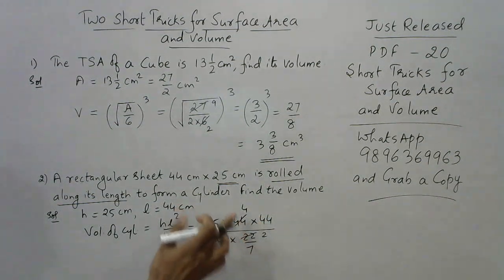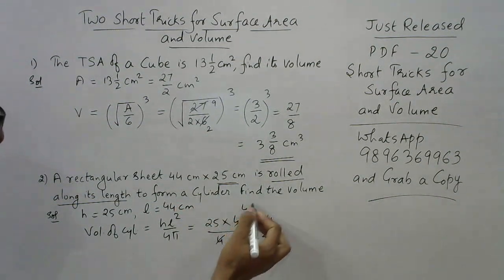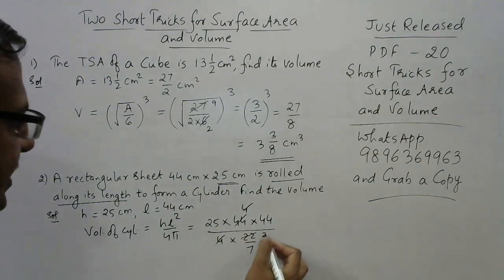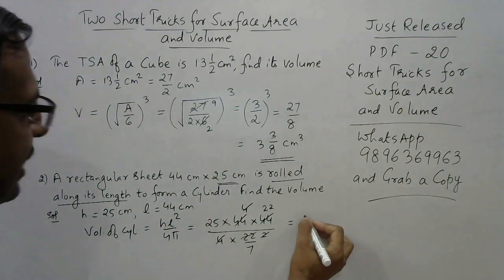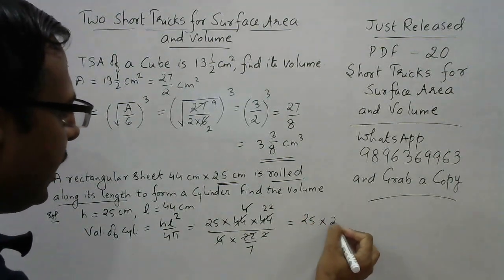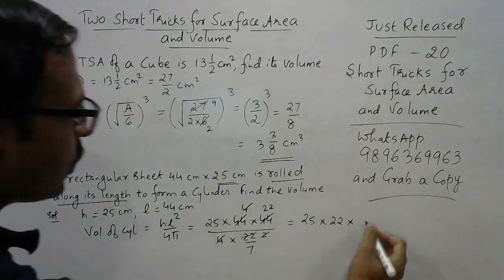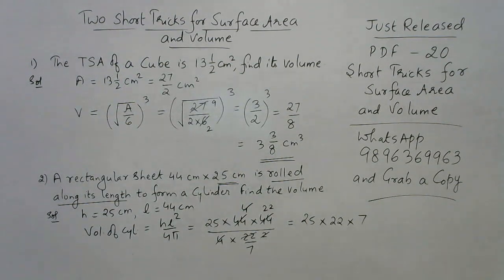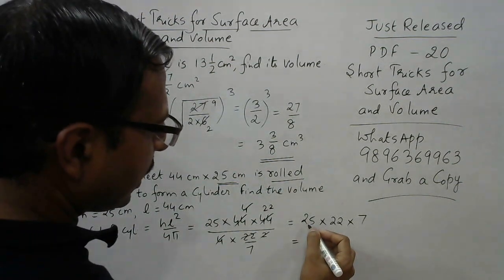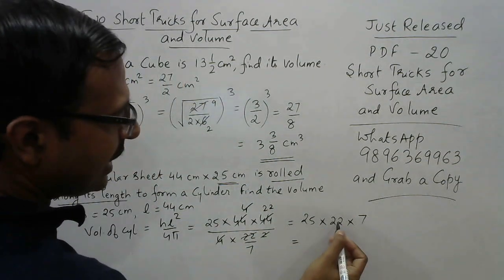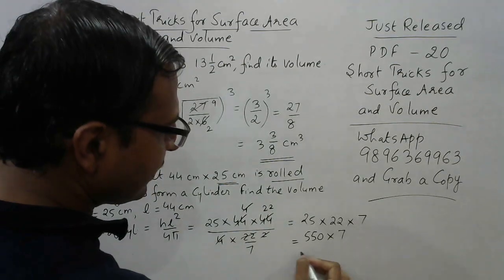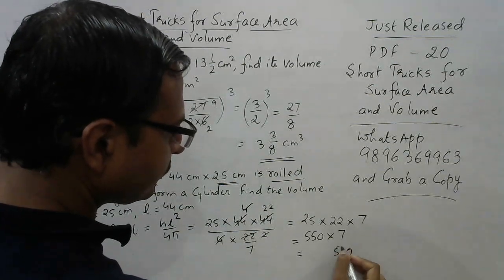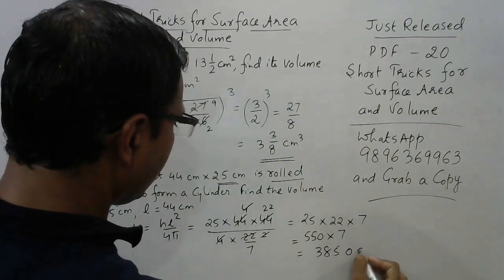Here, 22 means this is 2 times, and this is 4 times. I've cancelled the common factors. 22 times, so here you have 25 into 22 into 7. This comes out to be 25 into 22 - that's 550 - into 7, thereby giving you the answer 3850 centimeter cube.